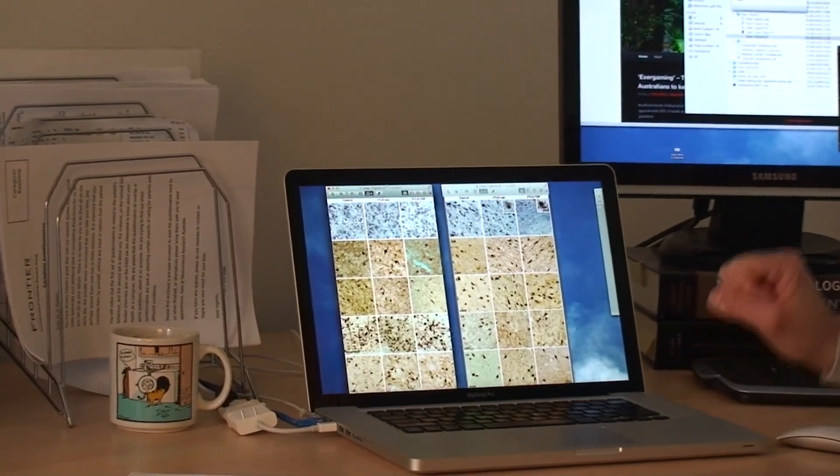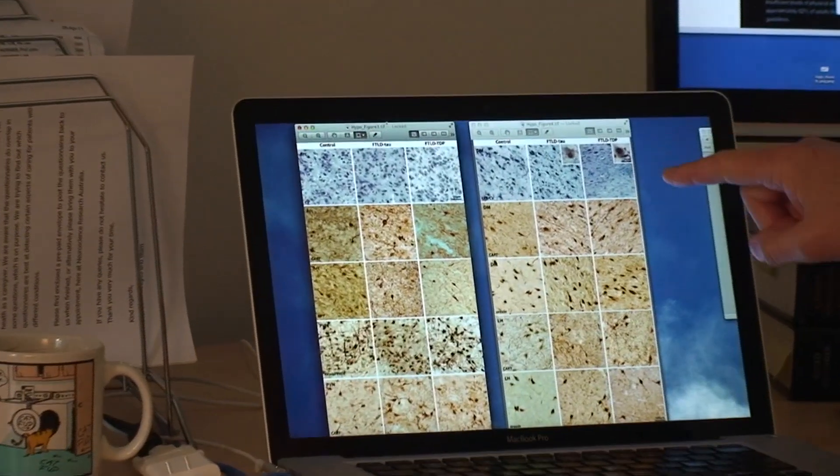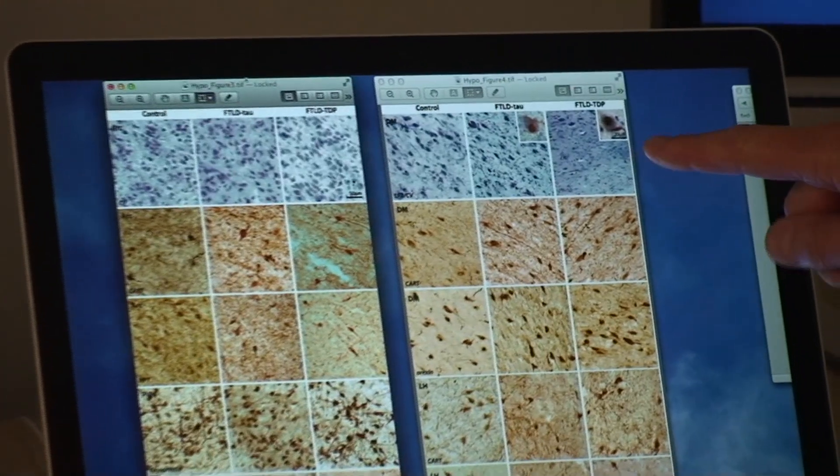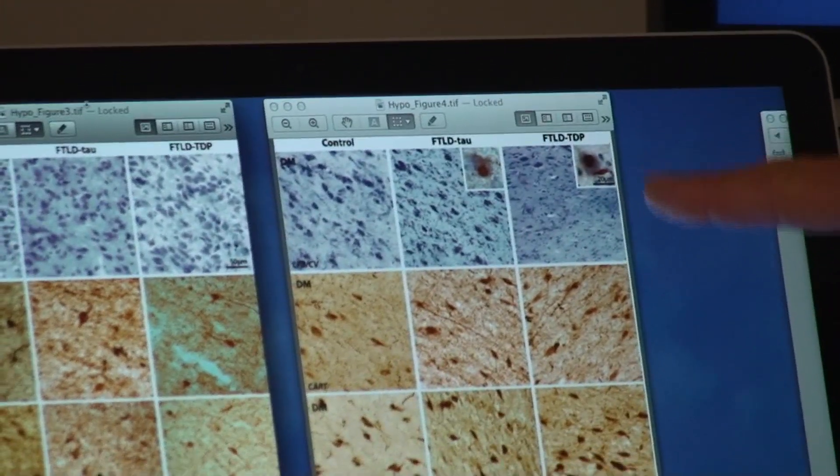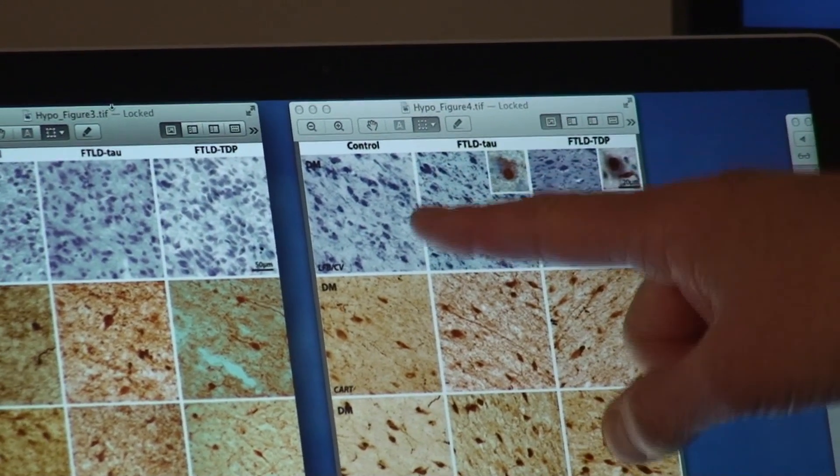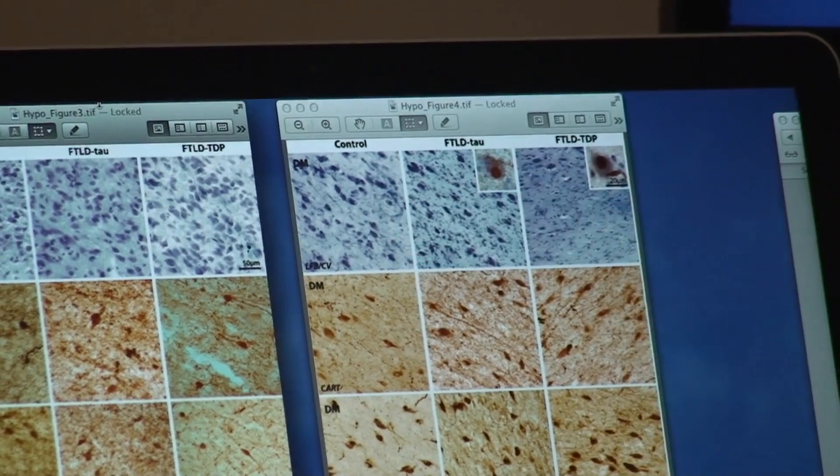And what we found was the posterior hypothalamus showed a marked neuronal loss, but only affecting the cases showing the TDP43 protein deposition in the brain and not in the cases with tau deposition in the brain, which was comparable to the neuronal density found in controls.